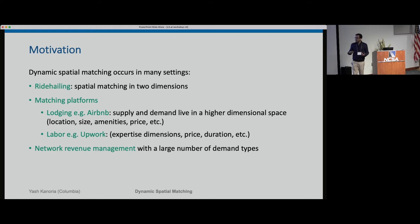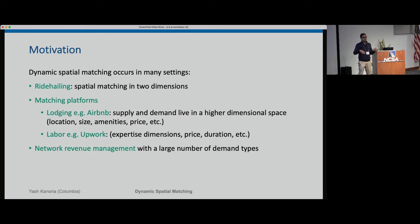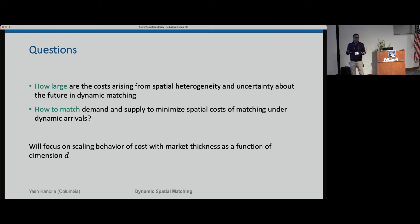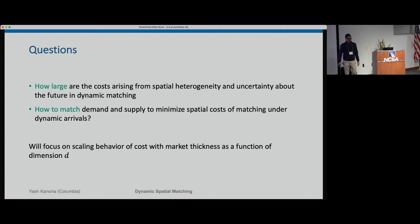The demand also lives in some space capturing customer preferences over those attributes, and similarly for labor markets. I come from the operations world and we have this class of problems called network revenue management, where we've been constrained to study a few demand and supply types. Now we want to study a large number of demand types — for instance, fulfillment problems at Amazon, where customers are located across tens of thousands of zip codes.